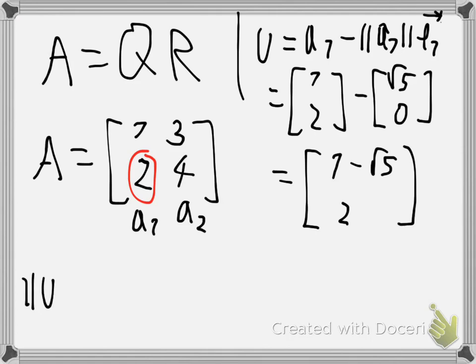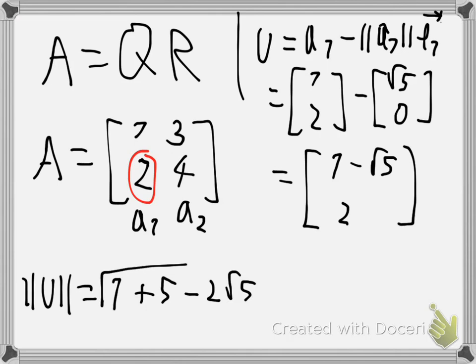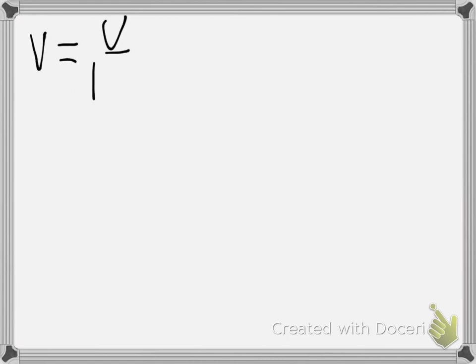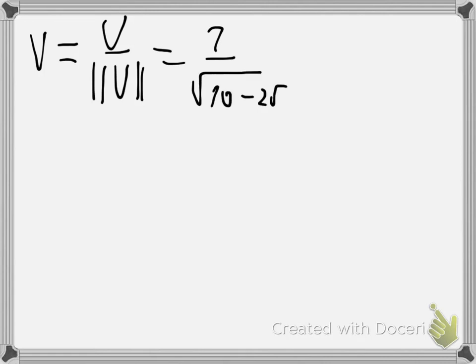The length of u would be sqrt(1 + 5 - 2*sqrt(5) + 4), which equals sqrt(10 - 2*sqrt(5)). Our unit vector v would be u divided by its length, so 1 over sqrt(10 - 2*sqrt(5)) times the vector (1 - sqrt(5), 2).